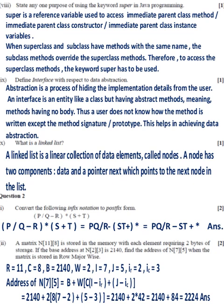An interface is an entity like a class but having abstract methods, meaning methods having no body. Thus a user does not know how the method is written except the method signature or prototype. This helps in achieving data abstraction.